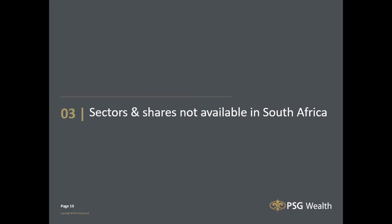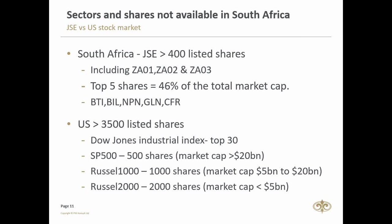The second point is shares and sectors not available in South Africa. Looking at the markets: the JSE has just over 400 listed shares across three categories — 01, 02, and 03. Only about 300 shares are really investable. Notably, just five shares make up 46% of the total JSE market cap: British American Tobacco, BHP Billiton, Naspers, Glencore, and Richemont. Compare that to the US with over 3,500 shares listed across various indices.